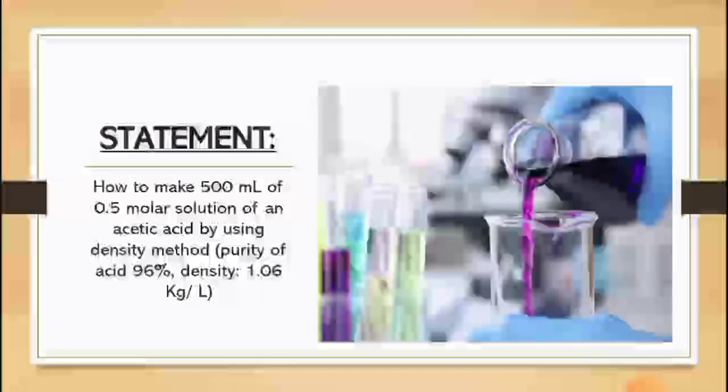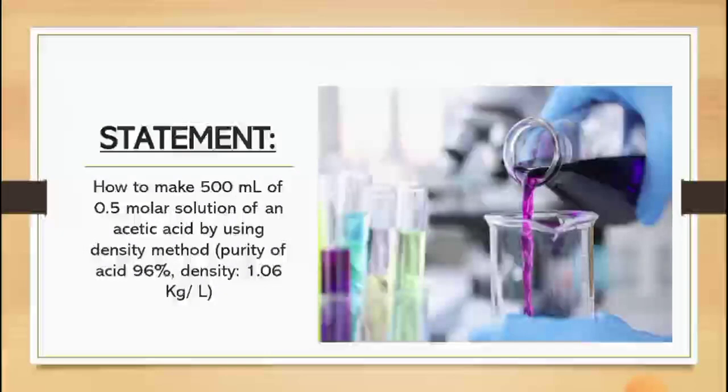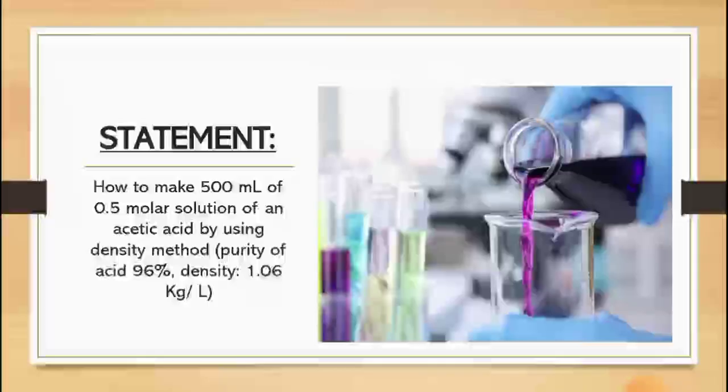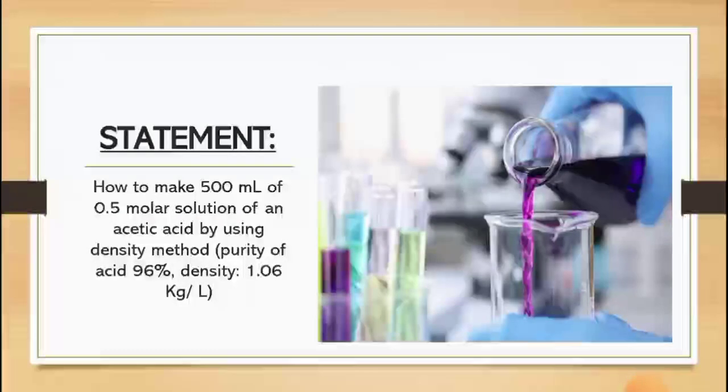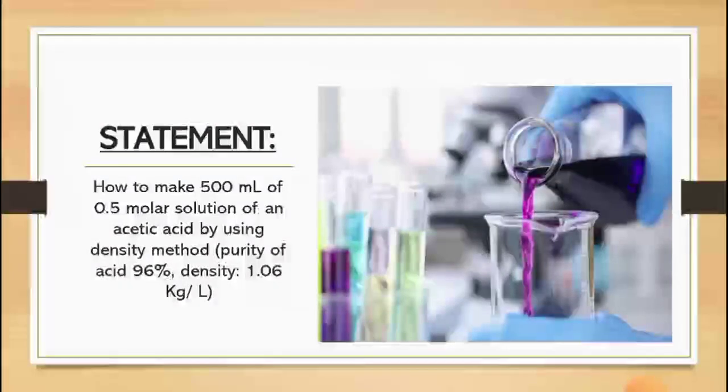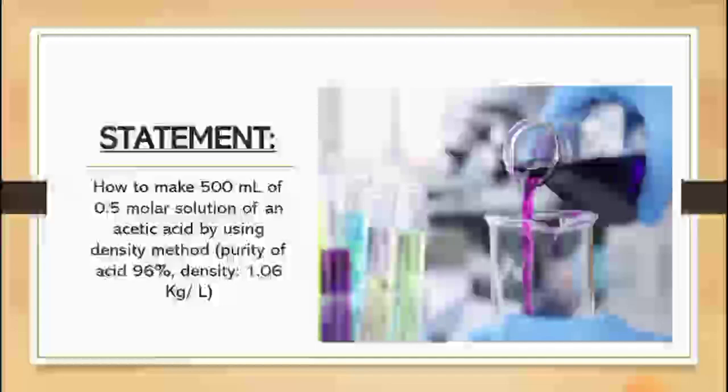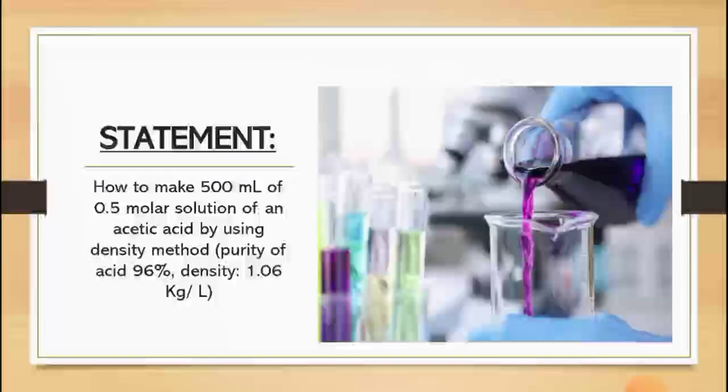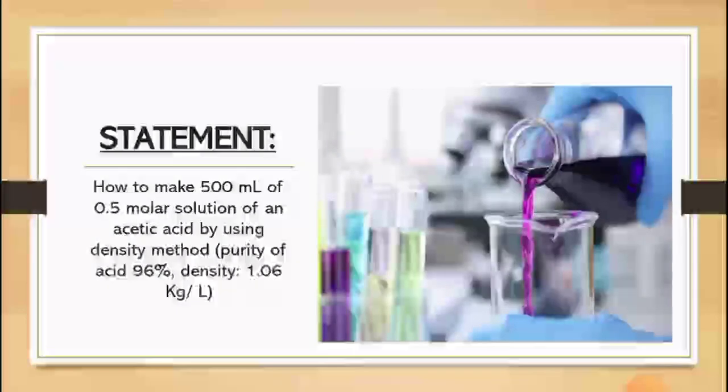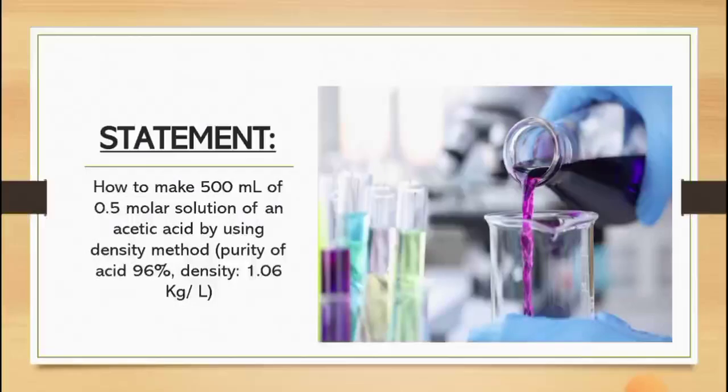First of all, we have to know what is acetic acid. Acetic acid is also known as ethanoic acid, ethylic acid, vinegar acid, and methane carboxylic acid. Its formula is CH3COOH. Its molar mass is 60.05 and the boiling point is 118 degree Celsius, and the melting point is 16.6 degree Celsius.